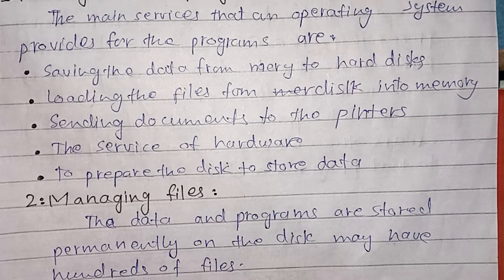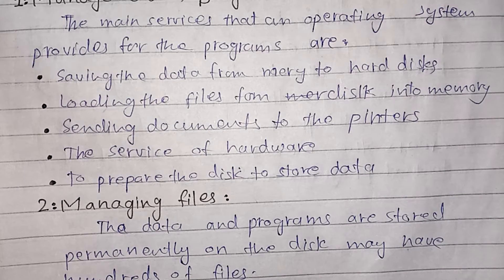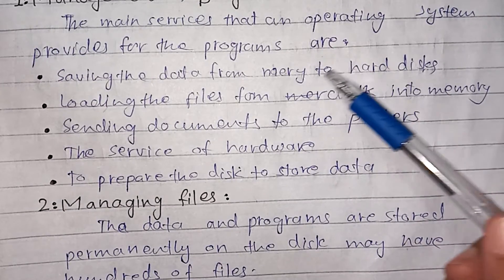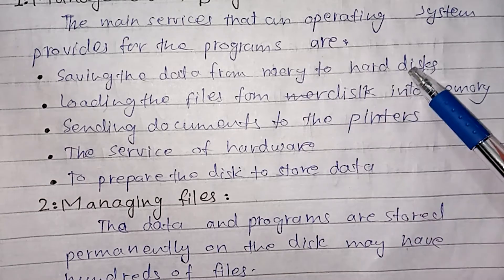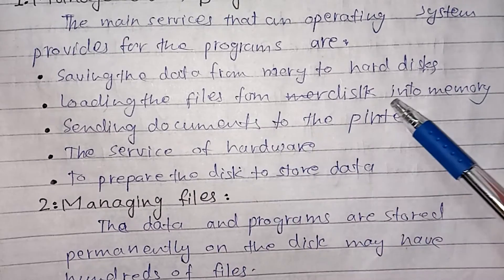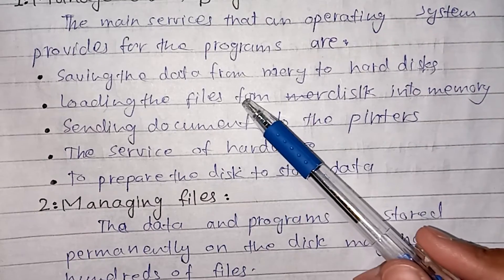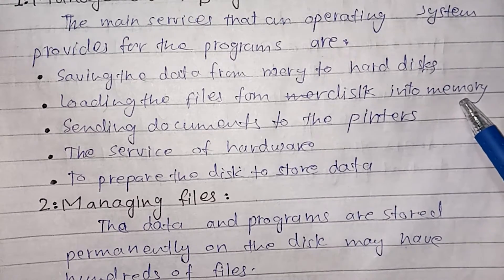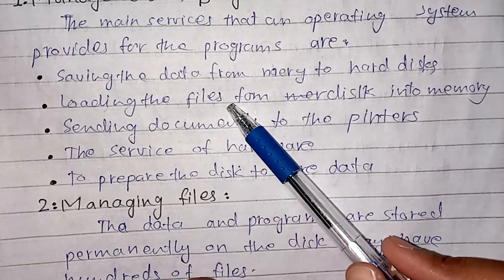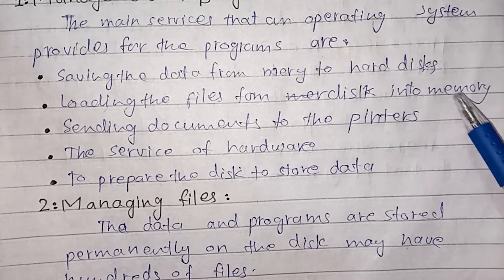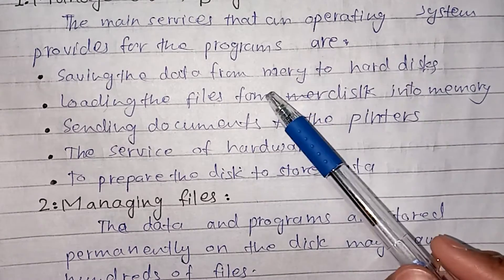The operating system handles management of programs, saving data from memory to hard disk, and loading files from disk into memory. Hard disk is a permanent storage device and memory is a temporary storage device, so data transfers from permanent to temporary and temporary to permanent.